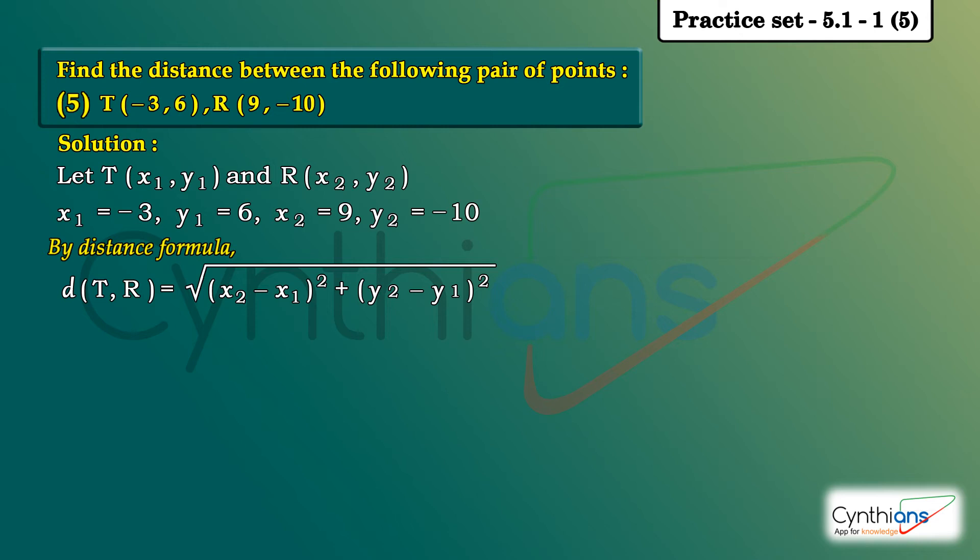Now let's substitute the values in the next step. Equal to square root of x2 is 9 minus x1 is minus 3. We can change this: 9 minus minus is plus, so 9 plus 3 the whole square. Plus y2 is minus 10 minus y1 is 6, so minus 10 minus 6 the whole square.